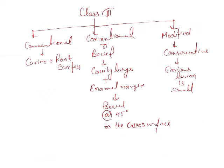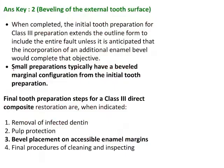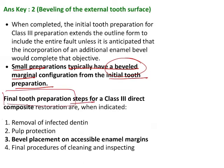If we just walk through the explanation here, we will see small preparations typically have a beveled margin configuration from the initial tooth preparation. There are many final tooth preparation guidelines or the steps for Class III direct composite that is going to be removal of infected dentin and pulp protection.